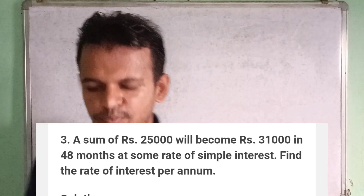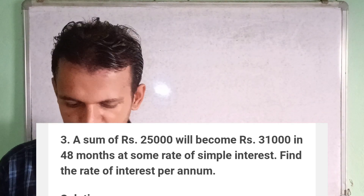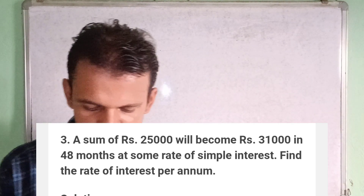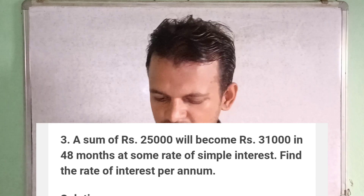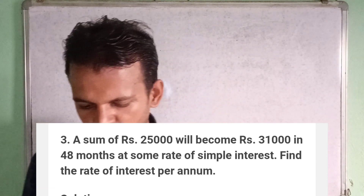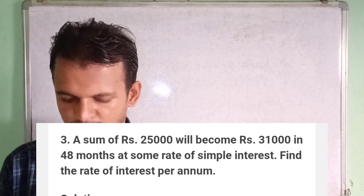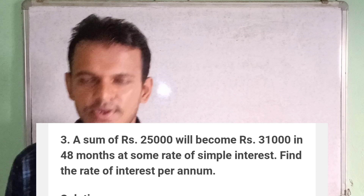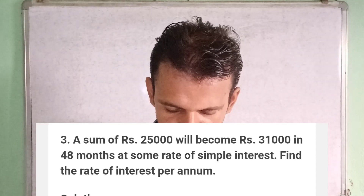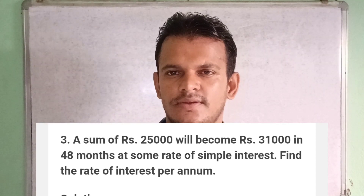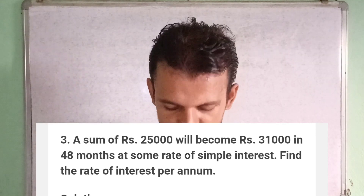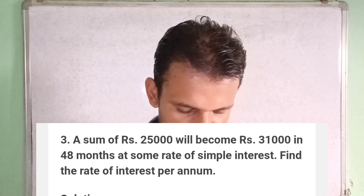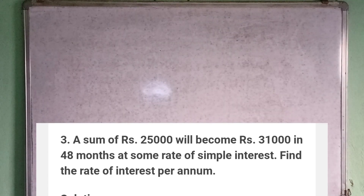Read this question very carefully and try to understand. The question is: a sum of rupees 25,000 will become rupees 31,000 in 48 months. If some rate of interest is given, find the rate of interest per annum. We need to know what is the rate of interest.